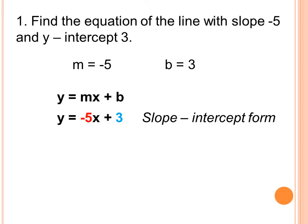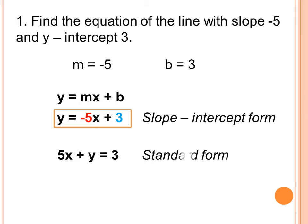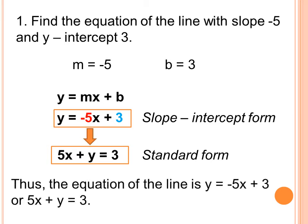Since our equation is in slope-intercept form, we can also write it as 5x plus y is equal to 3, which is in standard form. So any of the two can be the answer. The equation of the line is y is equal to negative 5x plus 3, or 5x plus y is equal to 3. Your answer can be in slope-intercept form or in standard form.